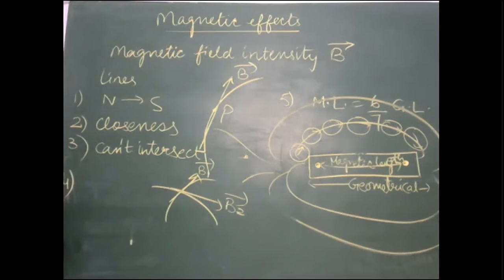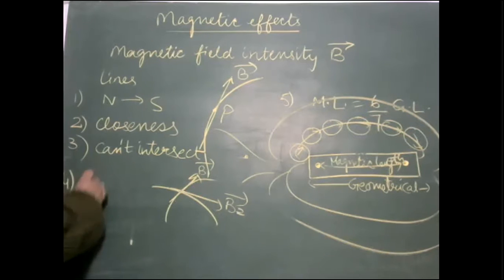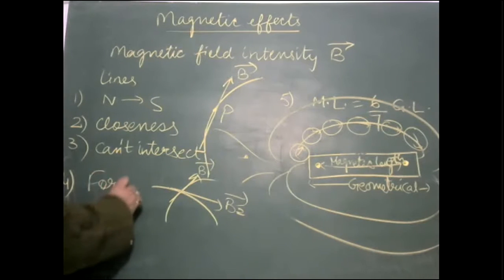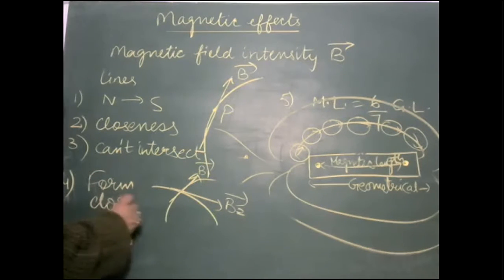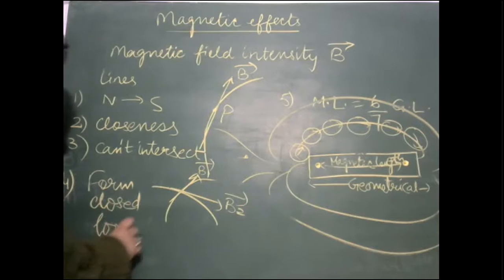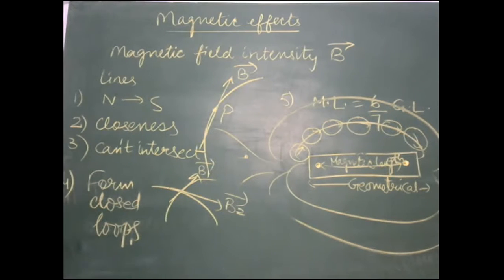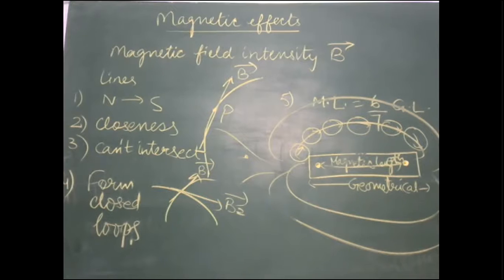The fourth property of magnetic lines is that they form closed loops. Magnetic lines form closed loops because they can pass through the body of the magnet as well — they continue inside the magnet from south pole to north pole.